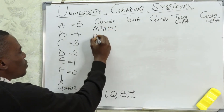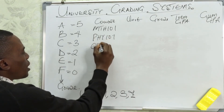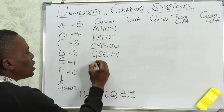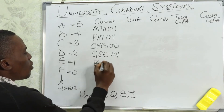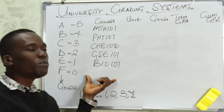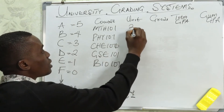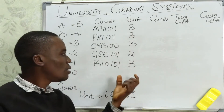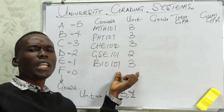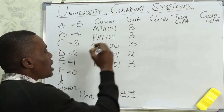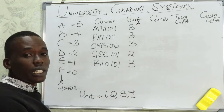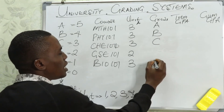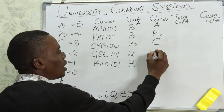Math 101 is the math you will be meeting wherever you find yourself in the university. These five courses are assigned units: Math 101 is 3 units, Phy 101 is 3 units, Chem 101 is 3 units, GSC 101 is 2 units, and Bio 101 is 3 units. Now let's assume a student in his first semester got an A in Math 101, an A in Phy 101, a B in Chem 101, a C in GSC 101, and a D in Bio 101.